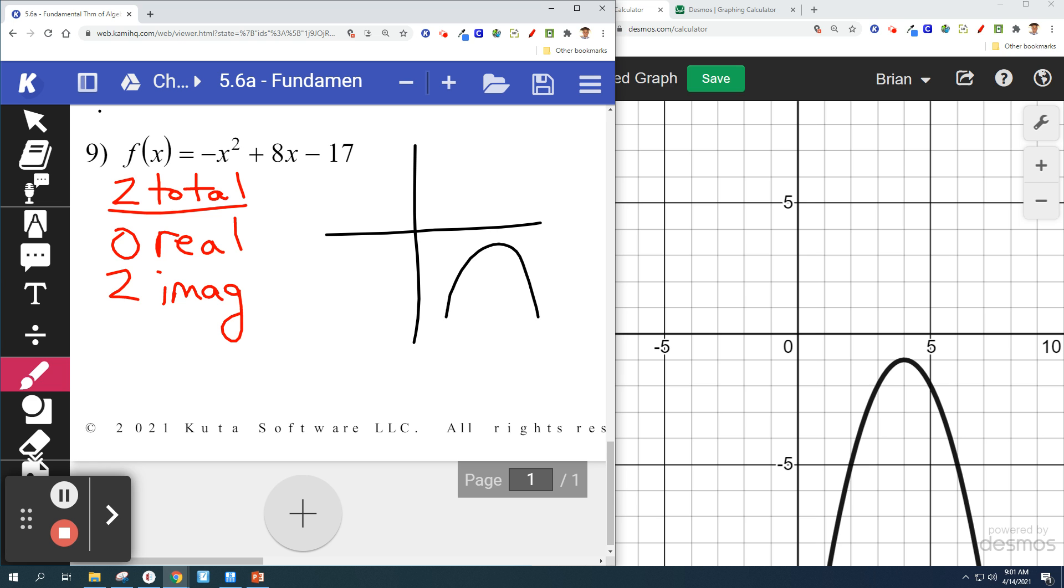It's always an even number. I don't know if you noticed that. I don't know about the real numbers. But the imaginaries, there's going to be zero or two or four. There's always going to be an even number of imaginaries for whatever the problem is.